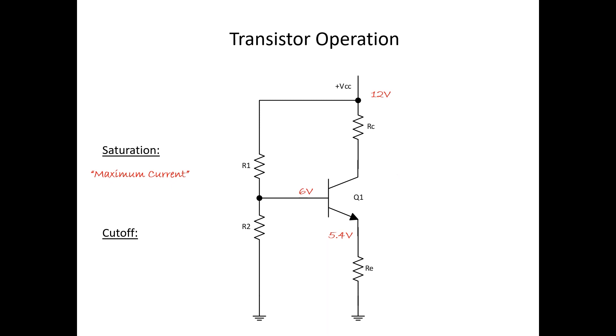Now let's do the opposite. Let's take that 6 volts and slowly decrease it. Anytime we decrease the base voltage on an NPN transistor, we're decreasing the forward bias of the base emitter junction, which is going to decrease current flow.